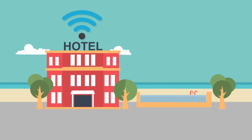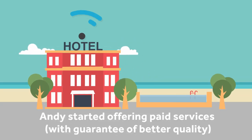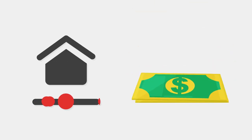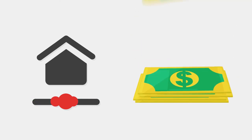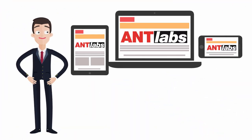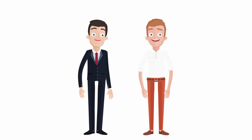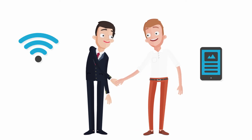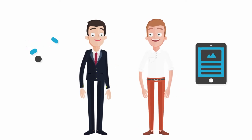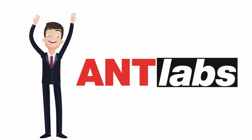With this, Andy started offering paid services with a guarantee of better quality, which is especially popular with conference and meeting users. This helps turn the Wi-Fi network into a revenue-generating infrastructure. With IG4, all of Andy's problems are solved — he is now able to plan and determine his bandwidth requirements, allocate bandwidth fairly to his guests, and generate revenue through offering good quality paid services. Andy is happy again.